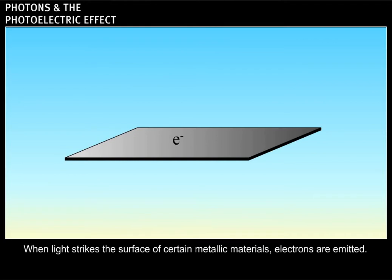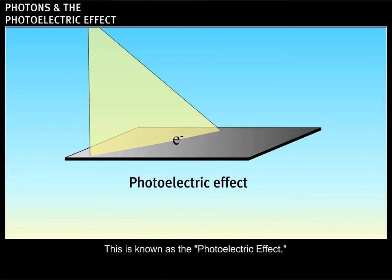When light strikes the surface of certain metallic materials, electrons are emitted. This is known as the photoelectric effect.